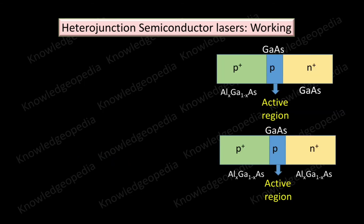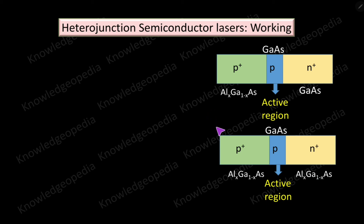Now, coming to the working of heterojunction semiconductor laser. The basic principles are the same as those of the homojunction semiconductor laser, but here the intensity of light is higher and the cavity loss is less. The refractive index of the active region is larger compared to the outer layers. The active region is gallium arsenide, and the materials used on either side are either gallium arsenide or aluminum gallium arsenide. The refractive index of gallium arsenide is higher than that of aluminum gallium arsenide.